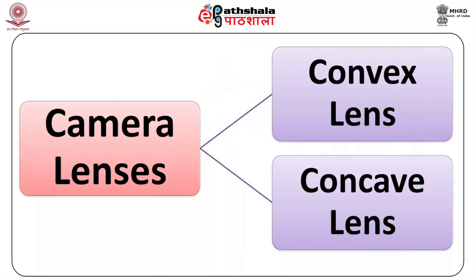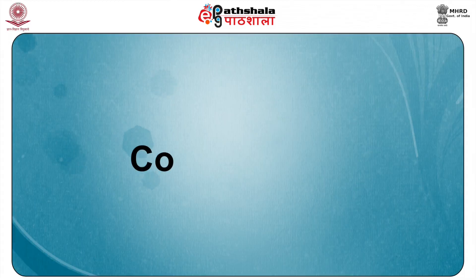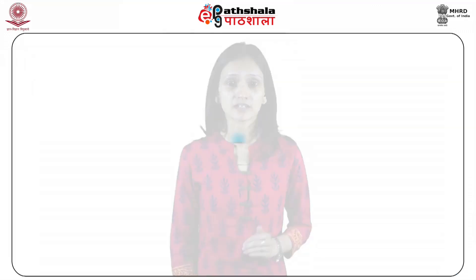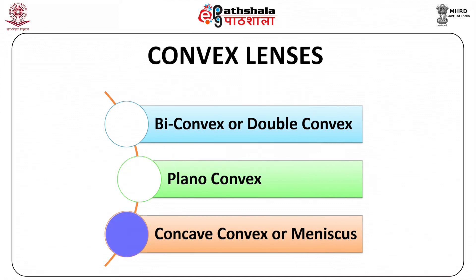Lenses are mainly divided into two types: convex lens and concave lens. The convex lens is thicker at the central portion and thinner at the peripheral portion. It casts a real image and so can be used to take photographs. Convex lenses can be divided into three types: biconvex or double convex, planoconvex, and concavoconvex or meniscus.